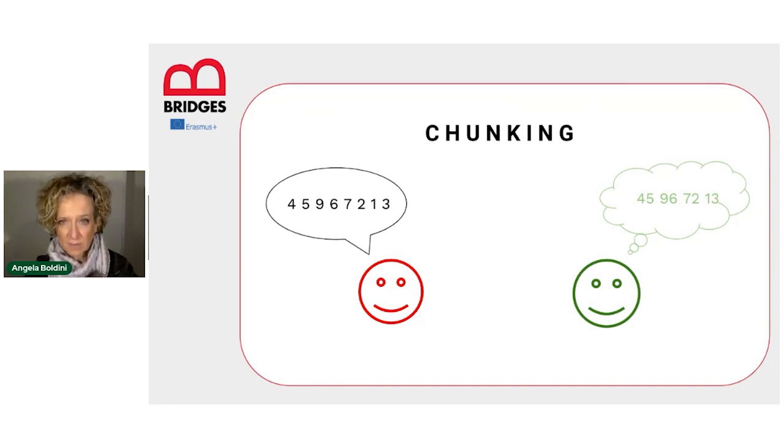So instead of saying that our short-term memory has an average capacity of 7 plus or minus 2 digits, we should say that it has an average capacity of about 4 chunks. And with chunk, we mean a piece of meaningful information, being that verbal or visual.